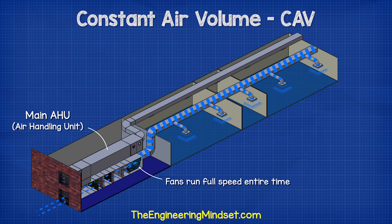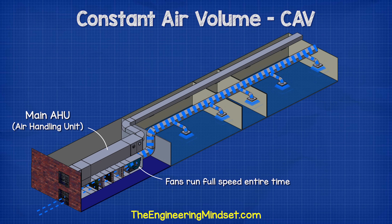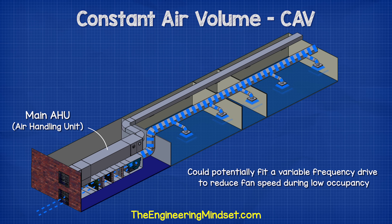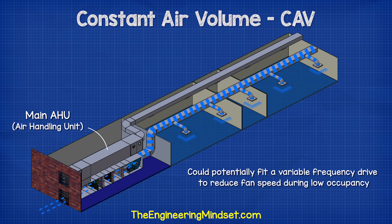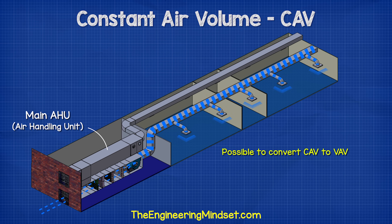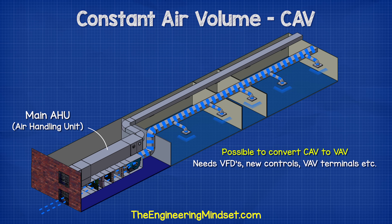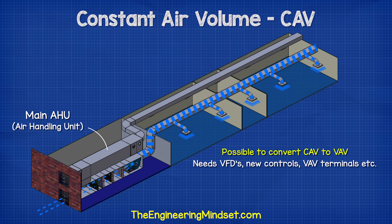The AHU fans will also run at 100% the entire time the system is running. Although you could fit a variable frequency drive to the fan motor and slightly reduce the flow rate at periods of low occupancy, keep in mind that this will impact how much fresh air is entering the room. Fitting just a VFD will not convert this system into a variable air volume system — we need a lot more controls, VAV terminals, etc. It does take a lot of time, money and effort to convert a system, but it can be done, although it might not be economical depending on the size of the building and the lifespan of both the equipment and the building.